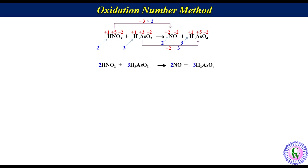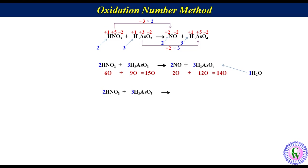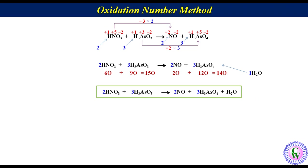For oxygen balancing, we count oxygen atoms on both sides. On the left there are 6 + 9 = 15 oxygen atoms, while on the right there are 2 + 12 = 14 oxygen atoms, so we add one water molecule on the right. The equation becomes: 2HNO3 + 3H3AsO3 → 2NO + 3H3AsO4 + H2O. On the left there are 2 + 9 = 11 hydrogen atoms and on the right 9 + 2 = 11 hydrogen atoms, so hydrogen is already balanced. This is the balanced redox reaction.